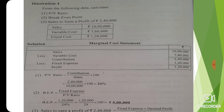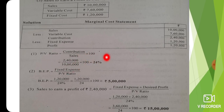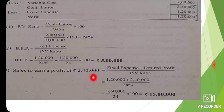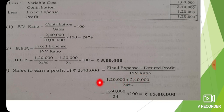Now, the marginal cost statement: sales are 10 lakhs, variable cost is 7.60 lakhs, so contribution is 2.40 lakhs. Fixed expenses are 1.20 lakhs, so profit is 1.20 lakhs. PV ratio is 2.40 lakhs divided by 10 lakhs, which equals 24%. Sales to achieve desired profit: fixed expenses plus desired profit divided by PV ratio equals 1.20 lakhs plus 2.40 lakhs, which is 3.60 lakhs divided by 24%, giving 15 lakhs.